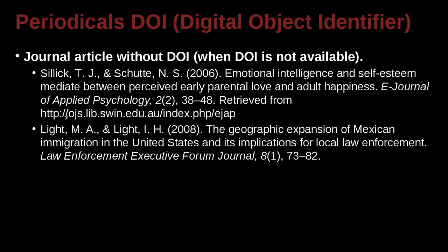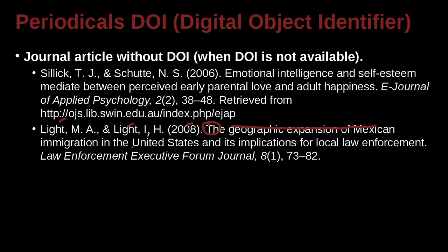Here is another example. We have the first author Light, the second author Light — different first names — then the year and period, the article's name, and again all lowercase except the first letter of the first word. Inside the article title we can see 'United States,' which is capitalized. Why? Because that's a name, and names are always capitalized. You could not write that lowercase.